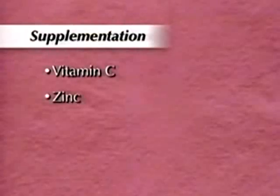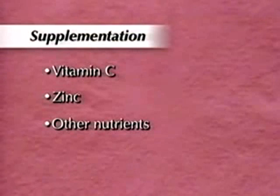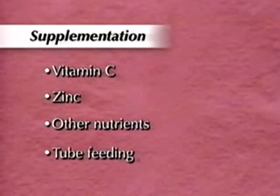For any patient with a pressure ulcer, encourage him to eat a balanced, high-protein diet and drink adequate fluids. For a malnourished patient with a pressure ulcer, suggest supplementation with vitamin C, zinc, and other nutrients that support wound healing. If that's not possible, consider tube feeding to achieve a positive nitrogen balance. Remember to document the patient's nutritional assessment and treatment in your notes.